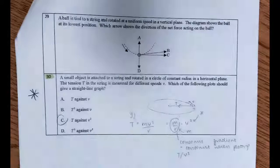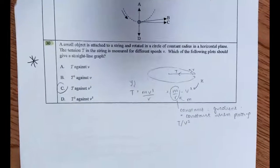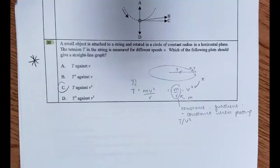Then in question 30, a small object is attached to a string and rotated in a circle of constant radius in a horizontal plane, so it's circular motion. The tension in the string is measured for different speeds of V, so the tension is obviously providing the centripetal force.